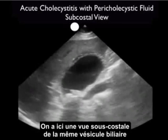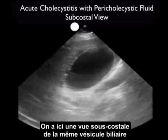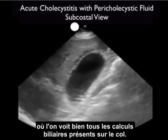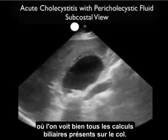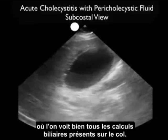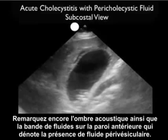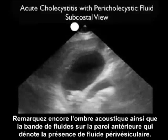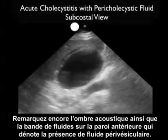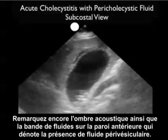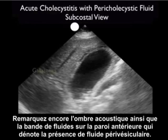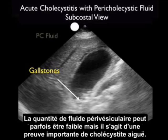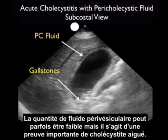Here we're looking at that same gallbladder from a subcostal view. Again we can appreciate the large concretion of gallstones present within the neck of the gallbladder and note the posterior acoustic shadowing. We can also see that stripe of fluid surrounding the anterior wall consistent with pericholecystic fluid. Sometimes that amount of pericholecystic fluid can be subtle, but it's a significant finding for acute cholecystitis.